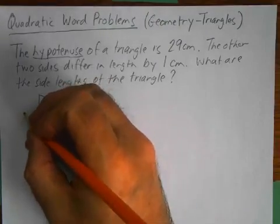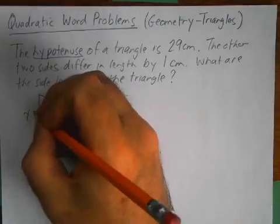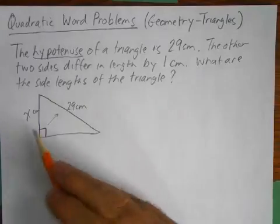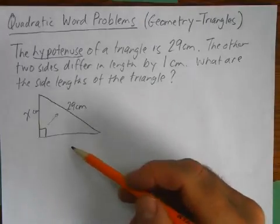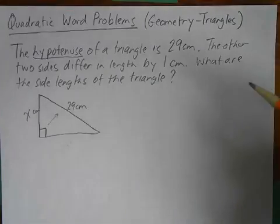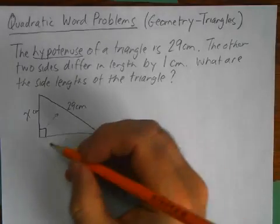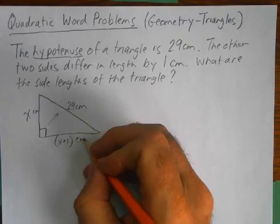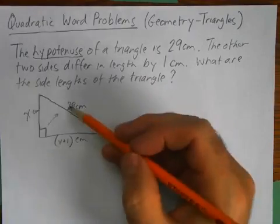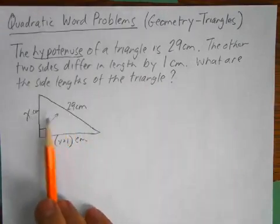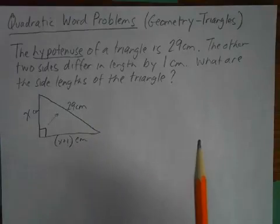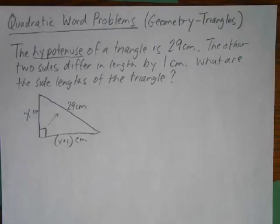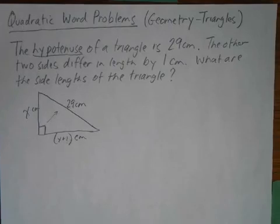So if I just decide I'm going to call this X and it's going to be in centimeters, then what's the length of this going to be? Well, it's going to be one apart. So it's either going to be X plus one or X minus one. I prefer to do the X plus one, but it would work for both. So now we've got a relationship. We know that the sides are X, X plus one and 29.